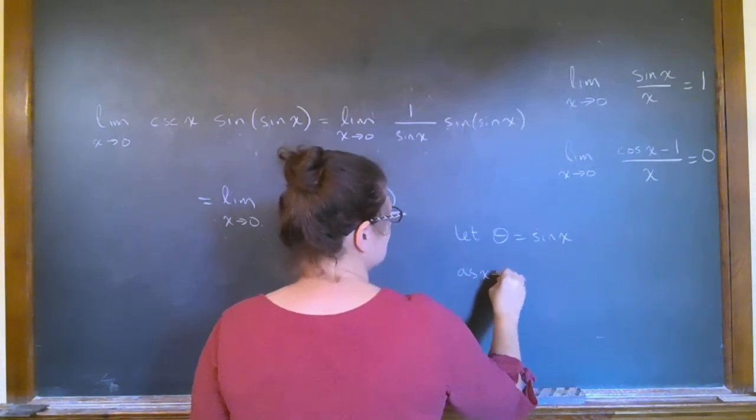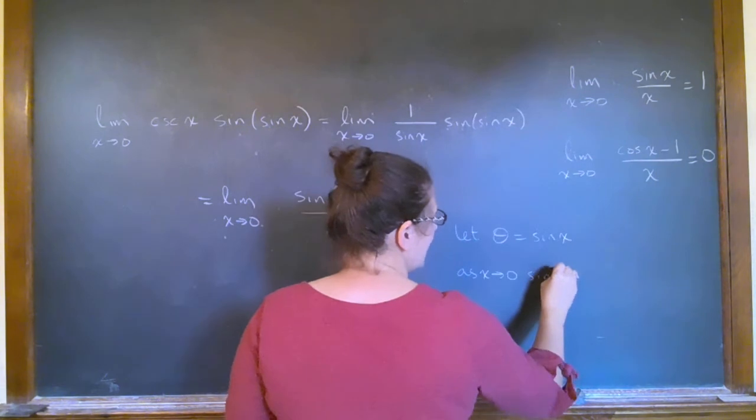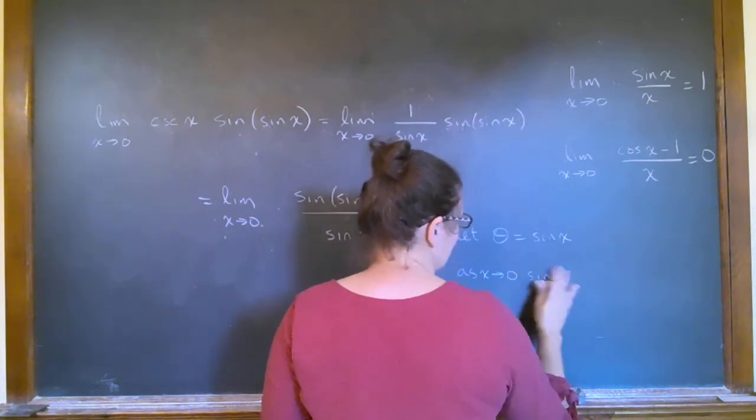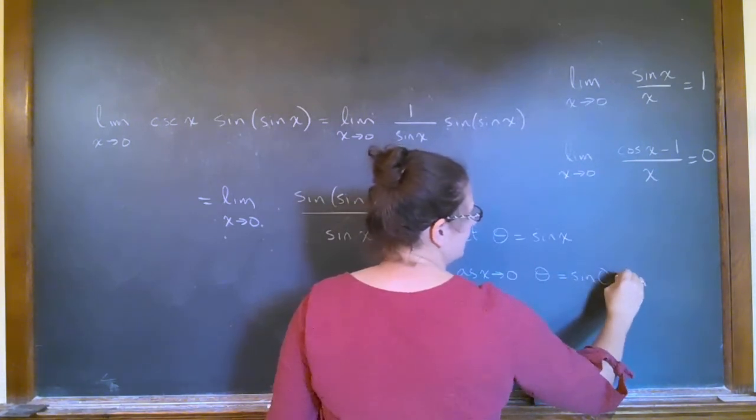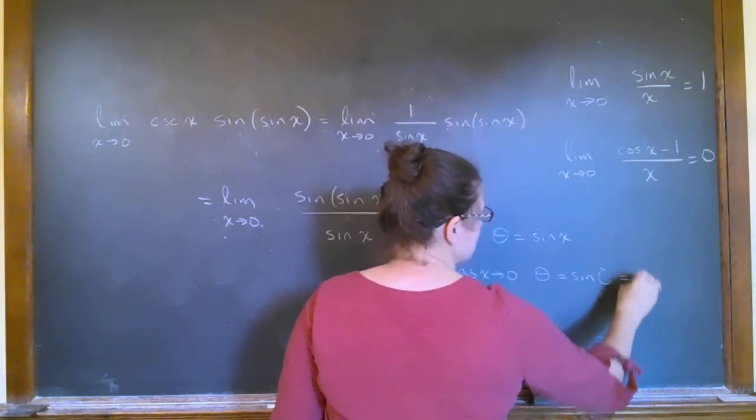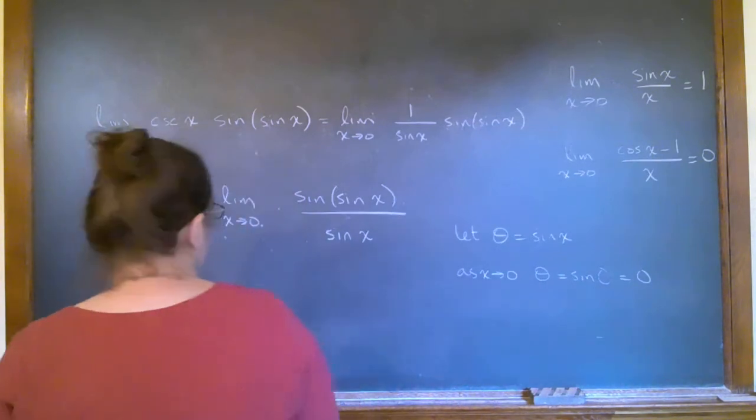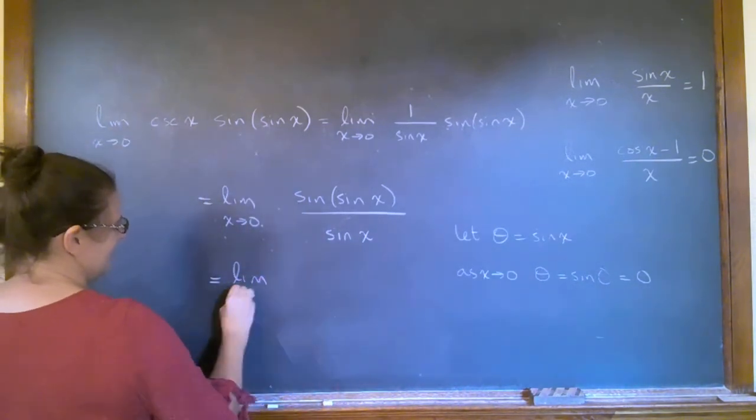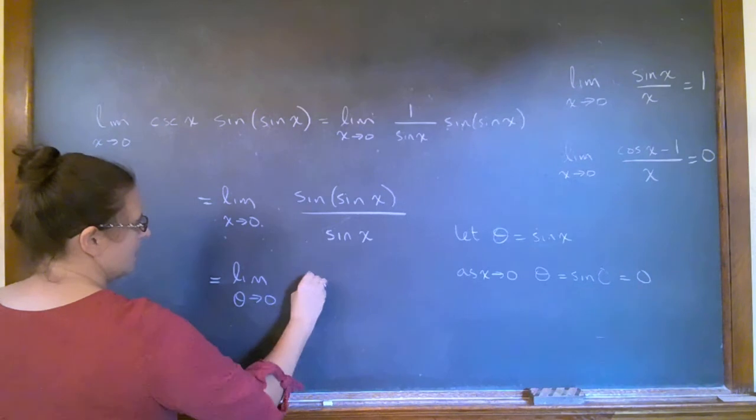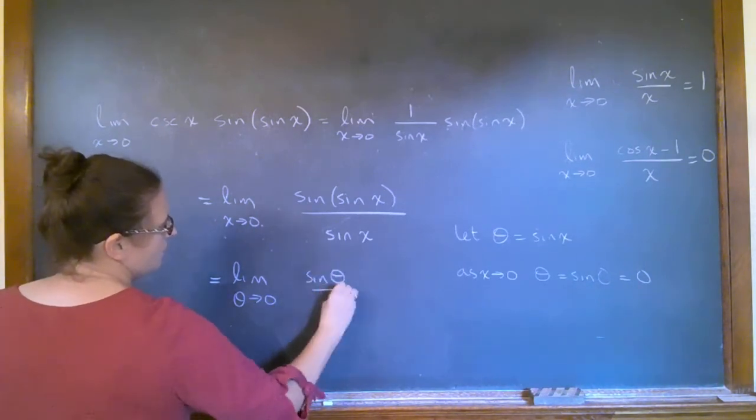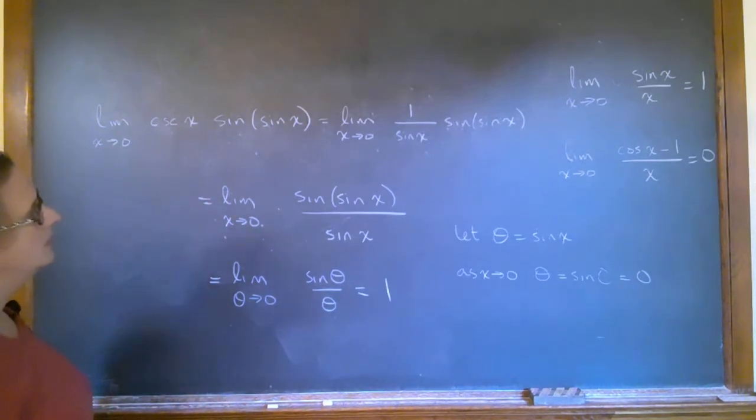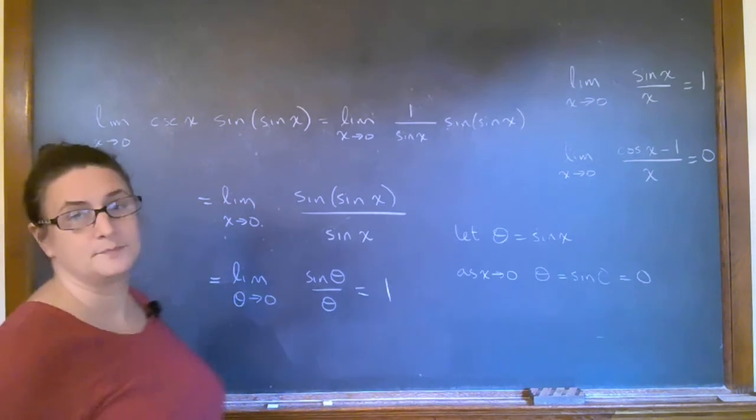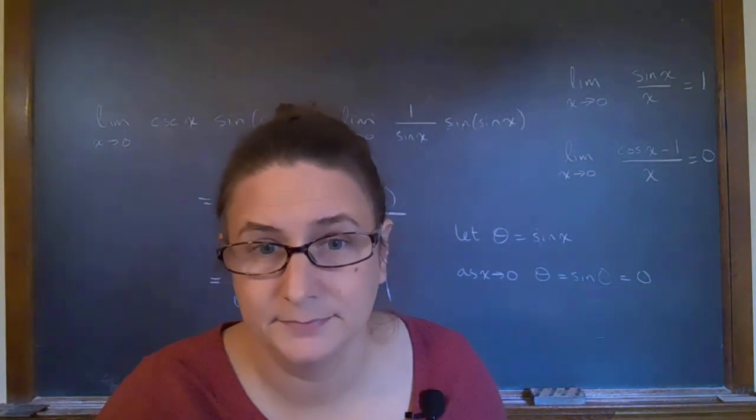As x goes to zero, sine of zero, well theta, which would be sine of zero, then goes to zero. So then this becomes limit as theta goes to zero of sine theta over theta, and then this is immediately one. Right, yes. So those are a couple of weird limits, and I'll see you next time.